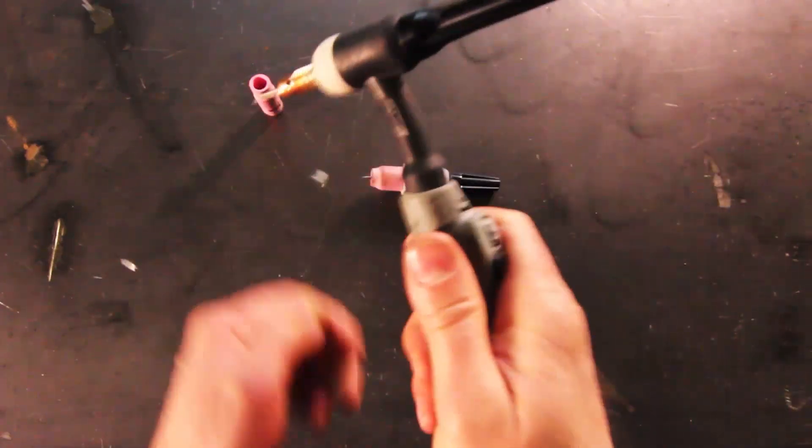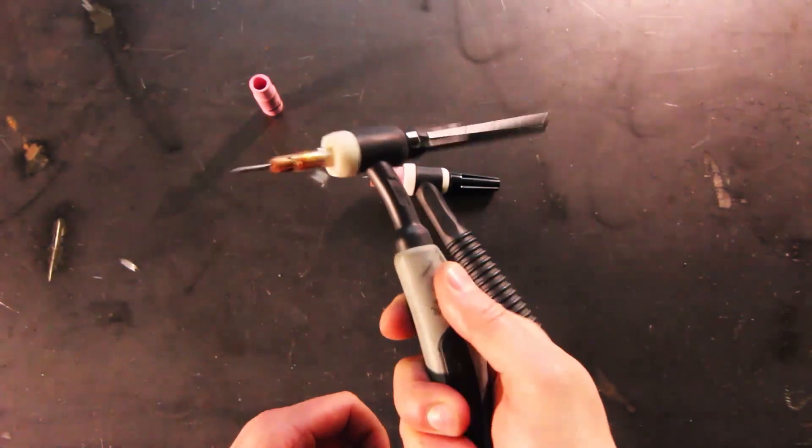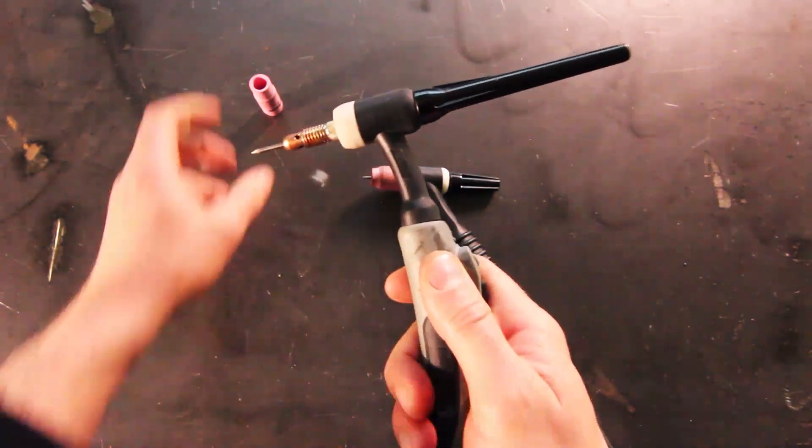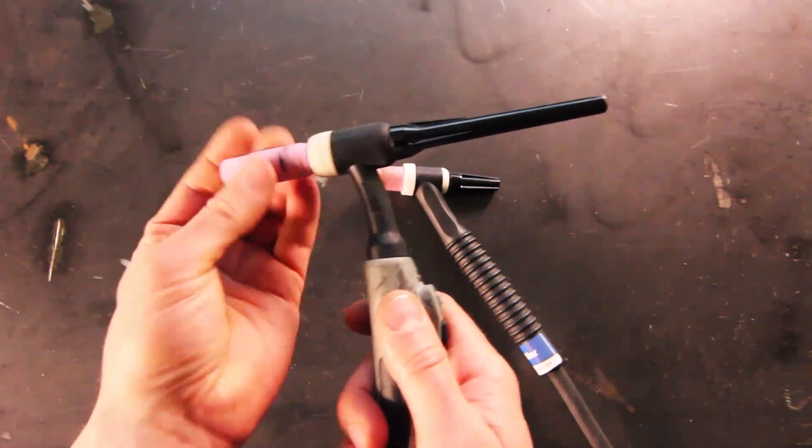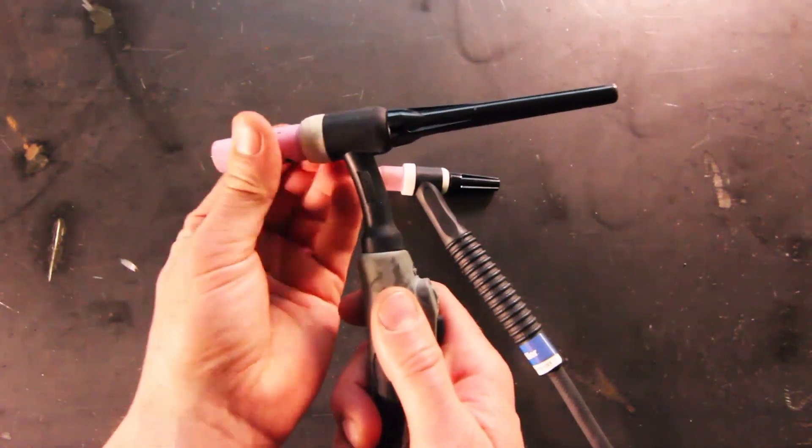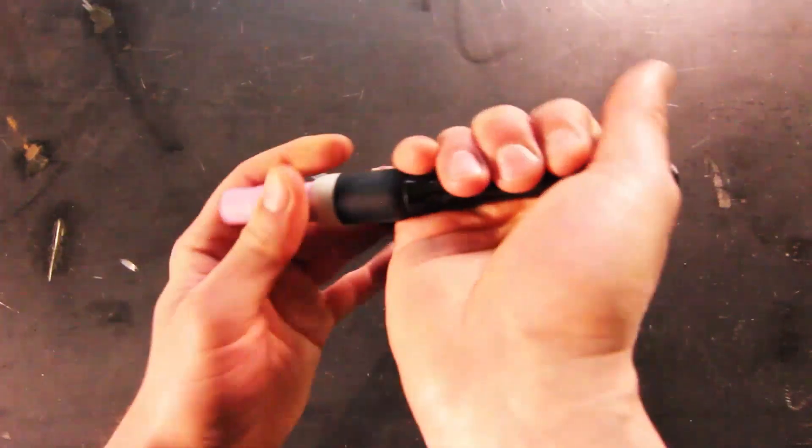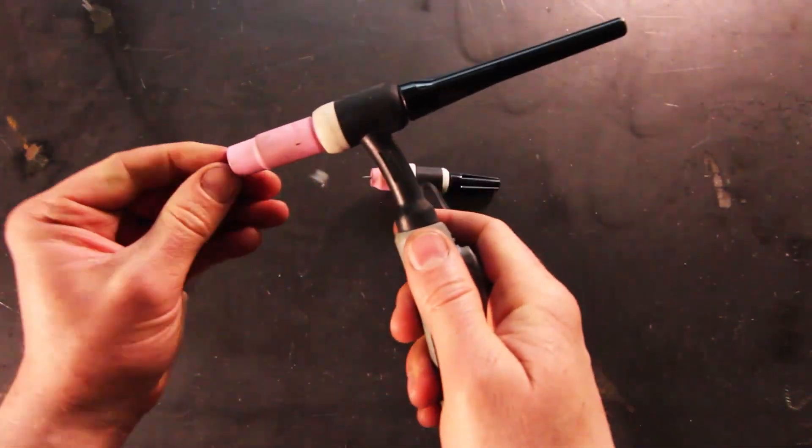Now put the nozzle over the collet body. It'll screw onto the collet body, and that's how you set up your TIG torch.